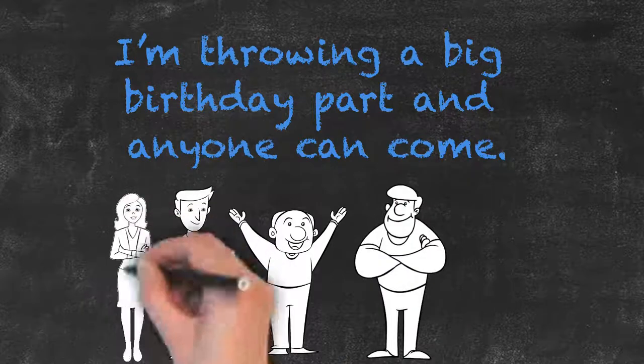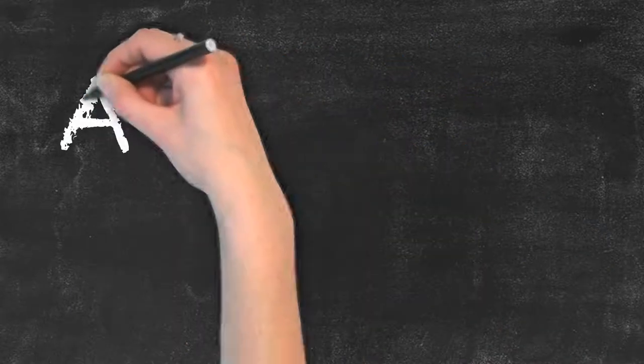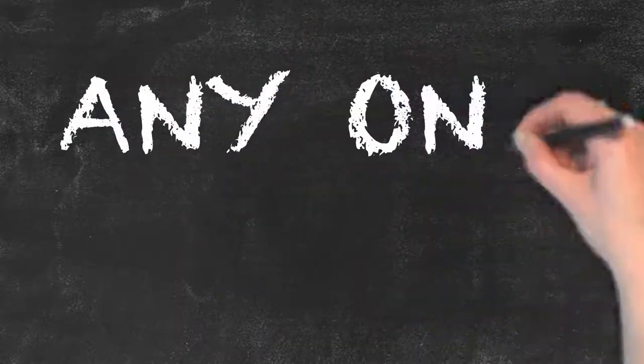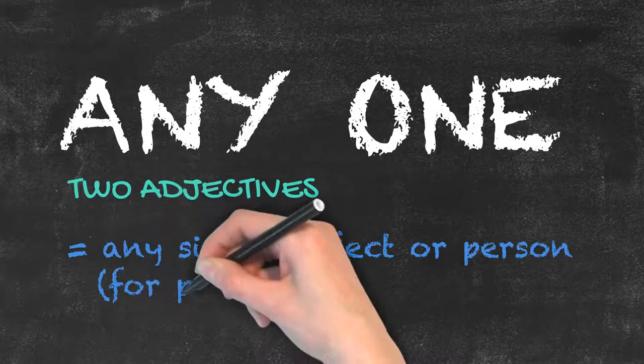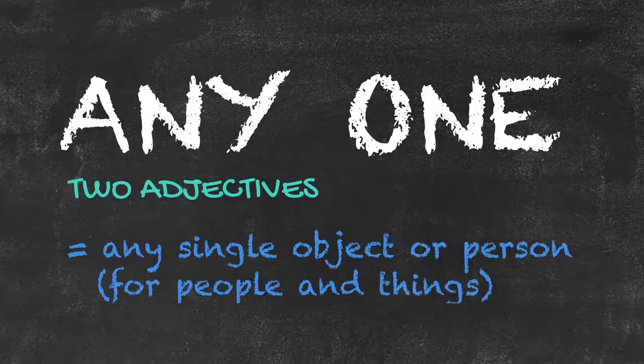big birthday party and anyone can come. Any one, on the other hand, is a phrase made up of two adjectives: any and one, and means any single object or person. For example, I